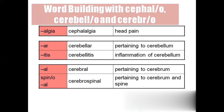Cephalgia — cephalo means head, algea means pain, so cephalgia means head pain. Cerebellar: pertaining to the cerebellum. Cerebellitis: inflammation of the cerebellum. Cerebral: pertaining to the cerebrum. Cerebrospinal: pertaining to the cerebrum and spinal cord.